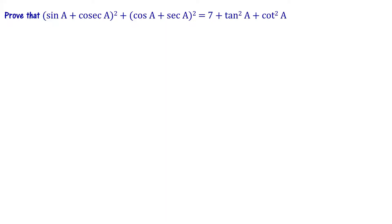Prove that (sin a + cosec a)² + (cos a + sec a)² = 7 + tan²a + cot²a. This is the left hand side expression. Let's simplify.